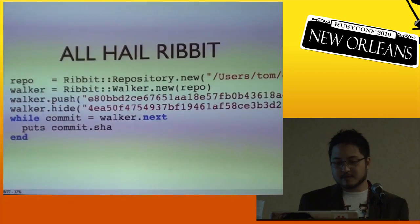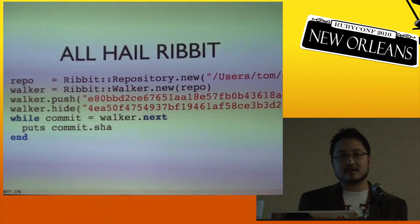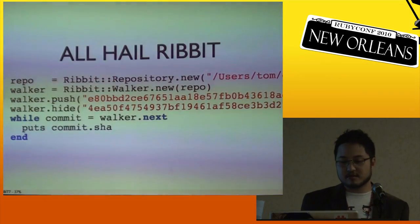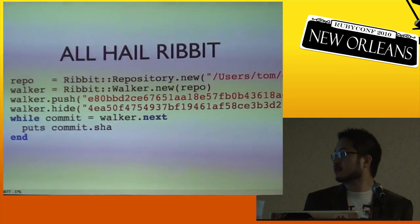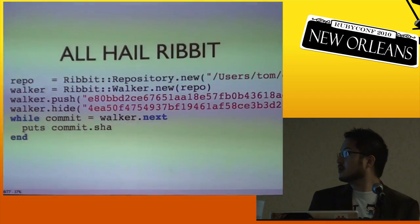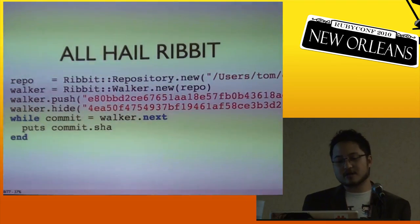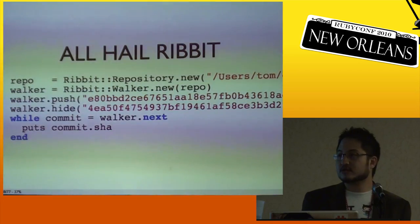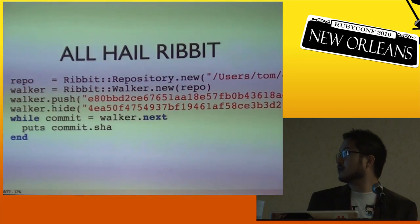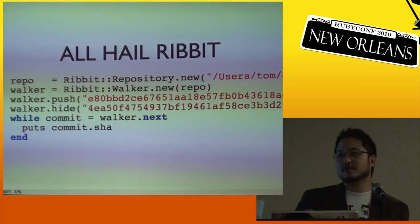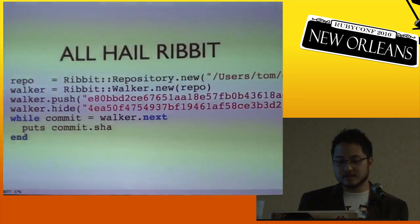This is what the Walker interface looks like — you just specify which two commits you want and then you can traverse through the commits. The commit will point to its parent commit and you just keep going up.